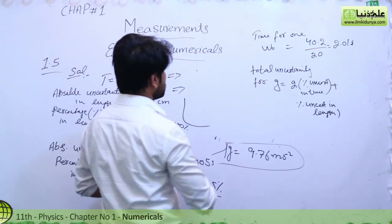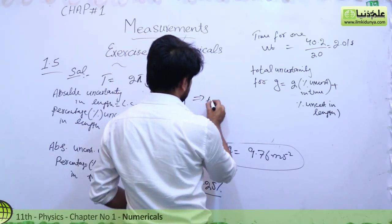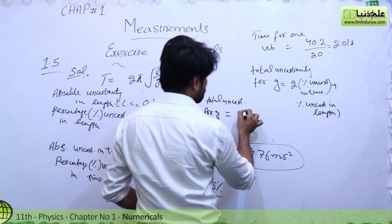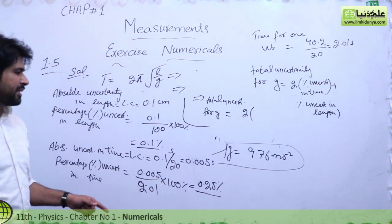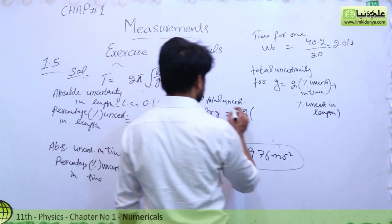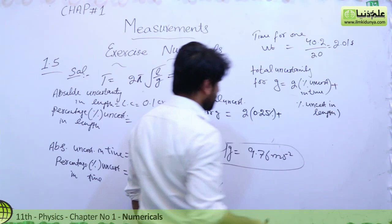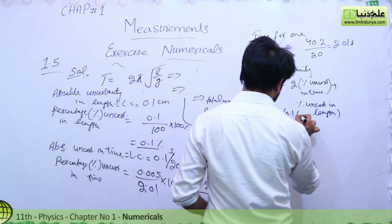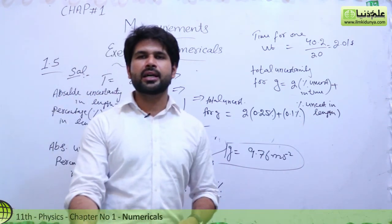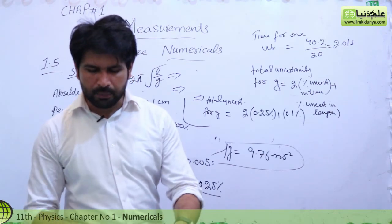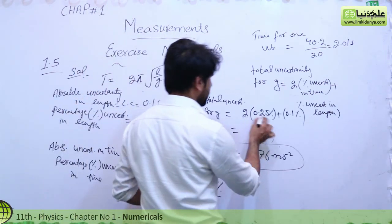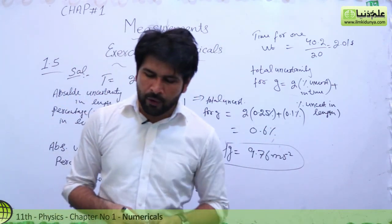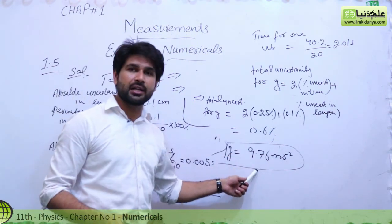Total uncertainty for g = 2 × 0.25% + 0.1% = 0.5% + 0.1% = 0.6%. So total percentage uncertainty for g is 0.6% of 9.76 m/s².